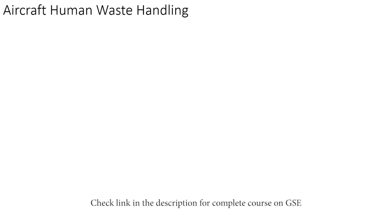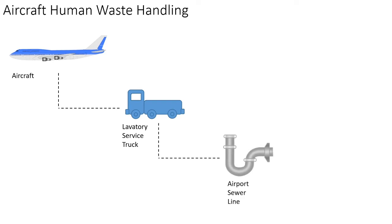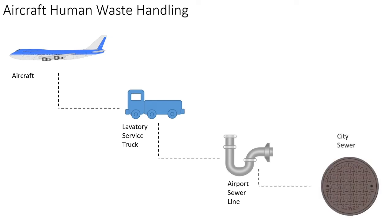The concept is simple. The aircraft remains in the air where passengers use the toilets. All the waste is drained by lavatory service equipment to empty the waste tank of the aircraft for the next flight. Lavatory service equipment services one or more aircrafts in a single go and then dumps the waste into the airport sewer line. The airport sewer line is connected to the city sewer system, so waste from the aircraft is ultimately dumped into the city sewer.